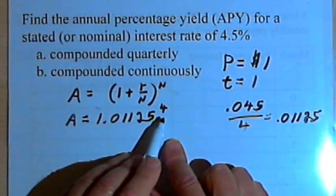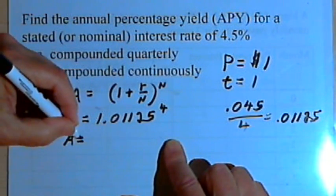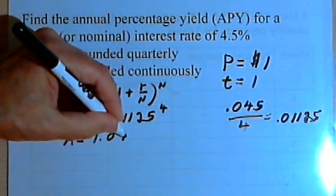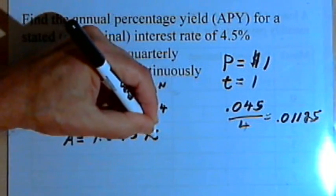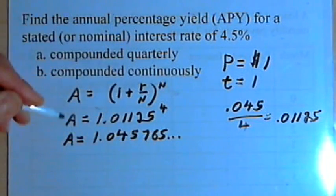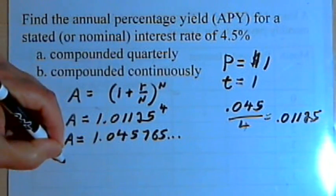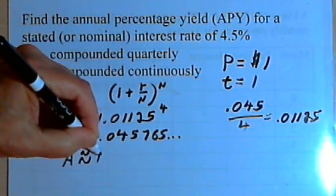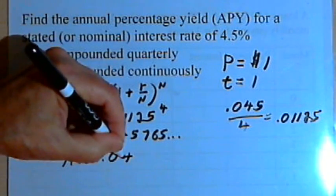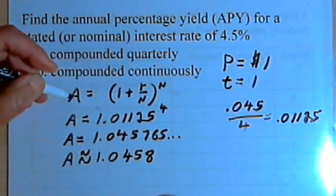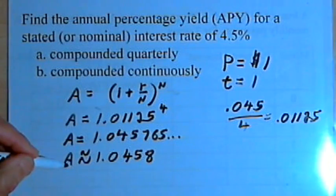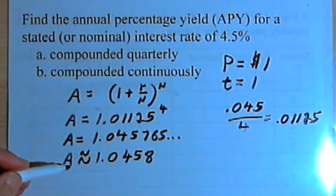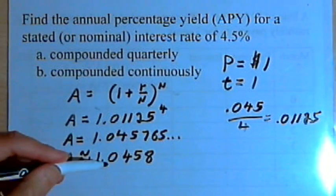We can put this into the calculator and what you'll find is you get something like 1.045765 and the number would keep going. So let's just round this to A equals approximately 1.0458. Now remember, A is the amount of money you get back from the bank.